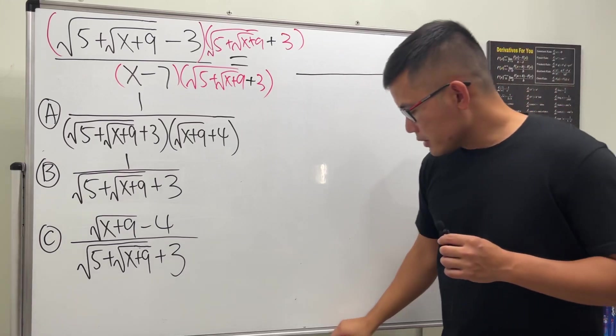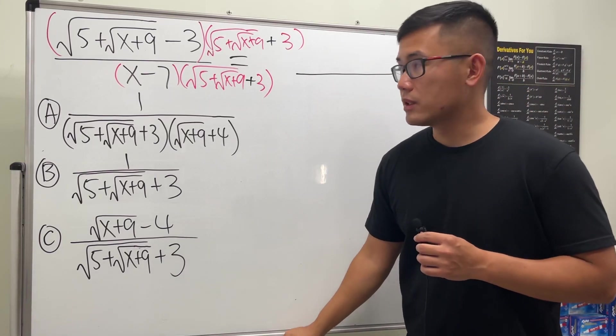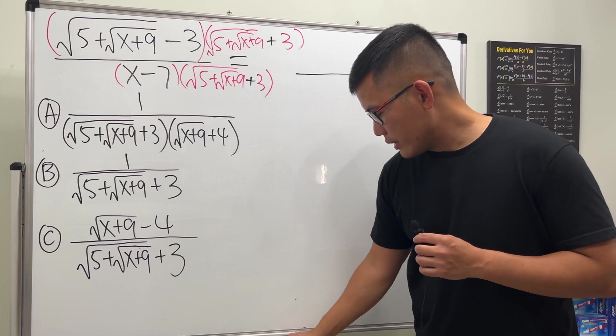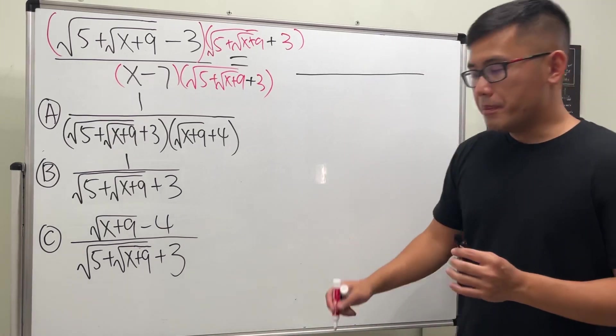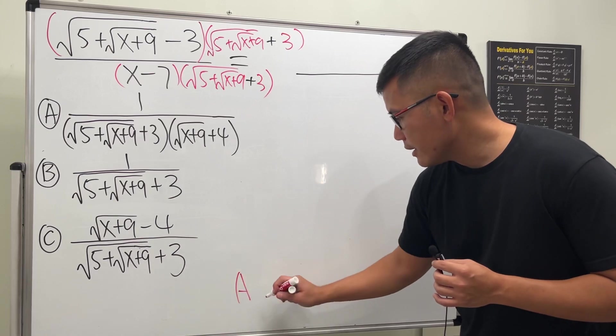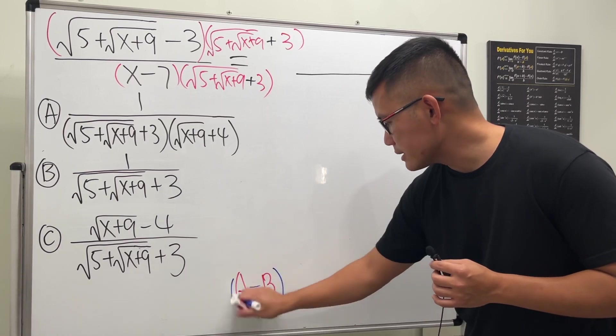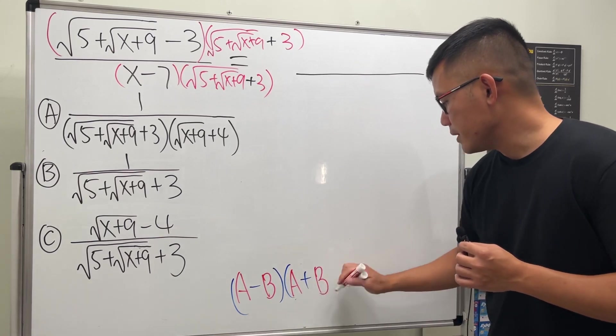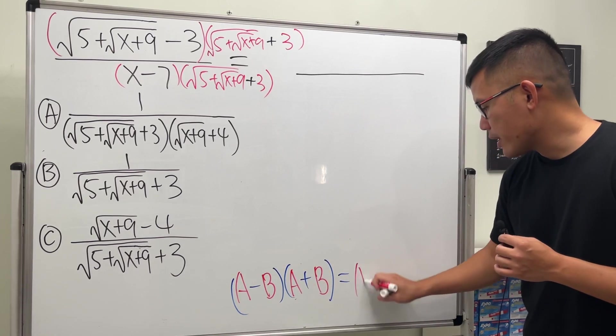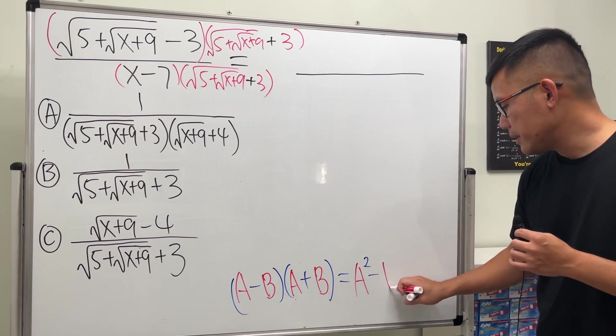So the purpose of multiplying the top and bottom by the conjugate is so that we can use this difference of two squares formula. Remember, when we have (a-b)(a+b), this right here is actually really nice because this gives us a² - b².